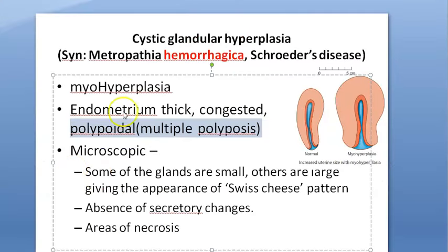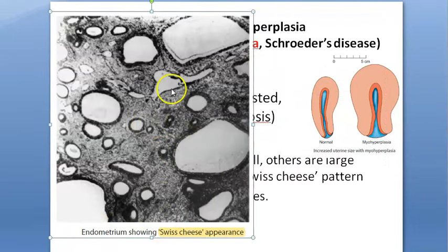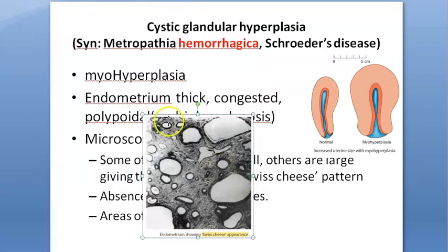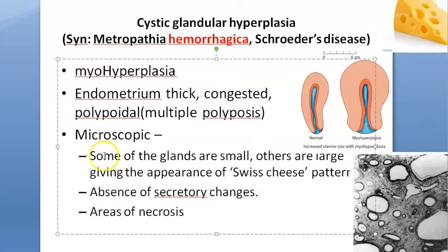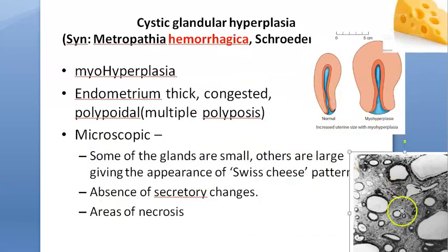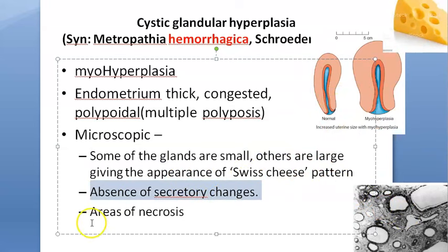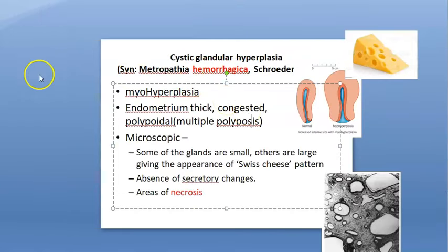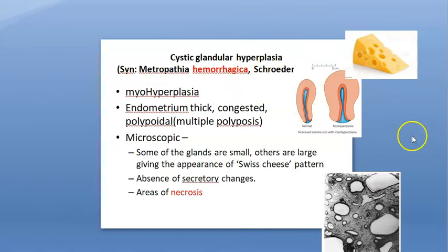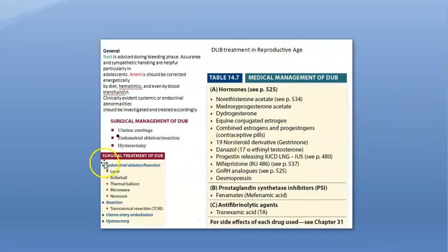Under the microscope, the endometrium shows a Swiss cheese appearance — some glands are small and some glands are very large, like the holes in cheese. Microscopically: some glands are small, some glands are large — Swiss cheese pattern. There is absence of secretory changes and areas of necrosis. This is all about Cystic Glandular Hyperplasia / Metropathia Haemorrhagica / Schroeder's disease.